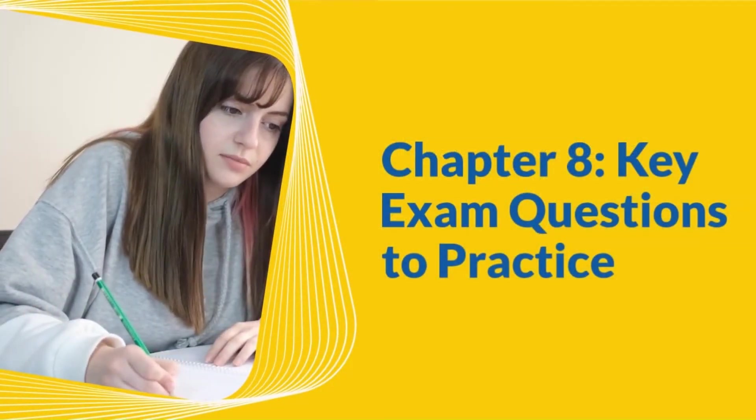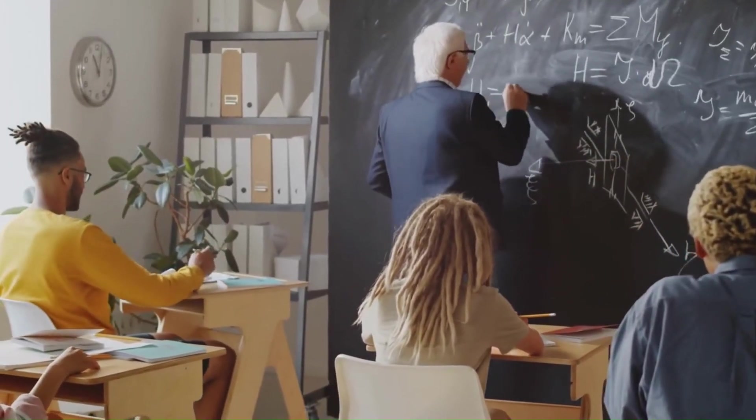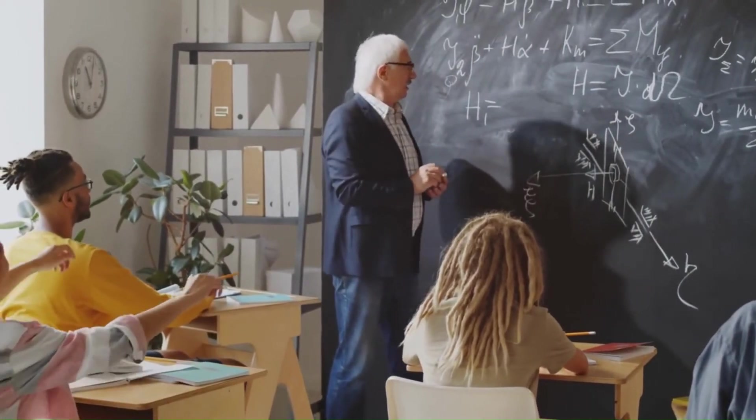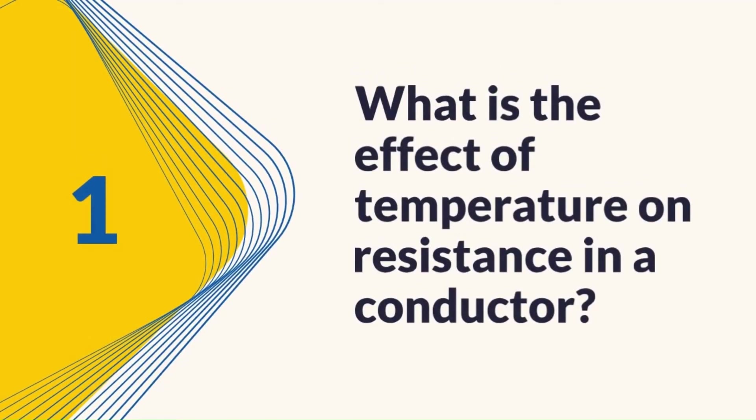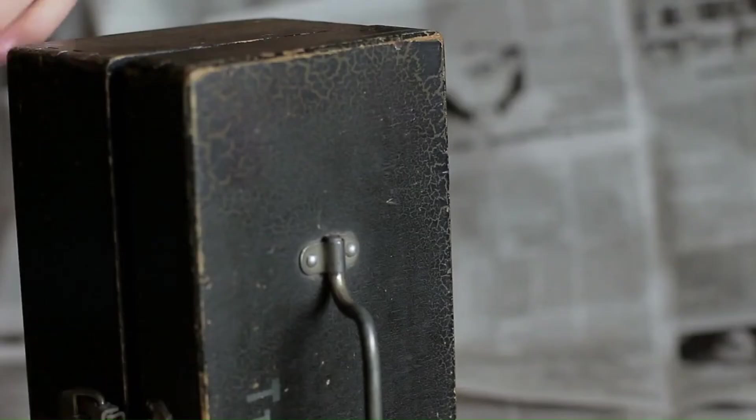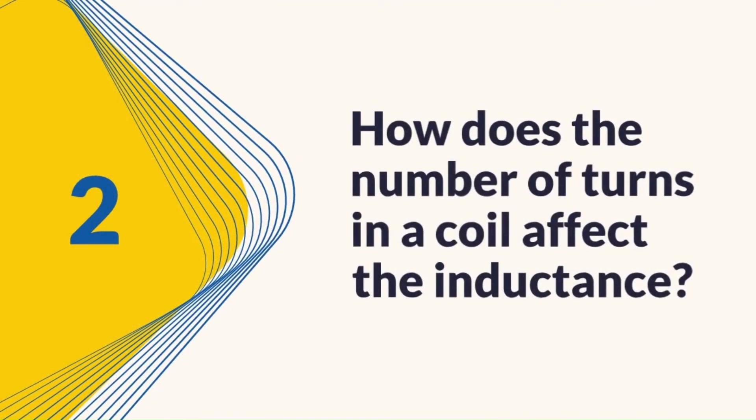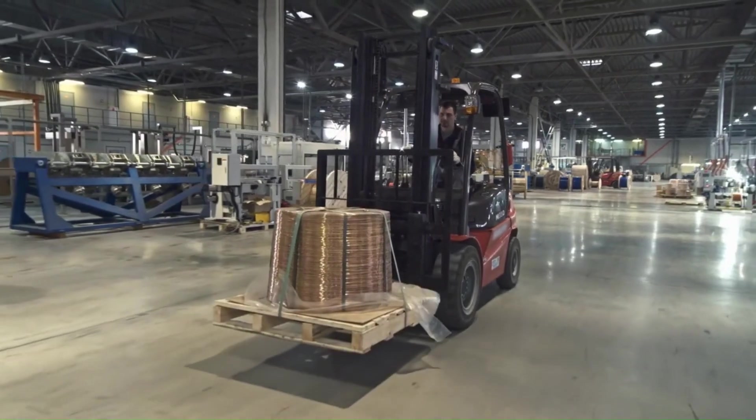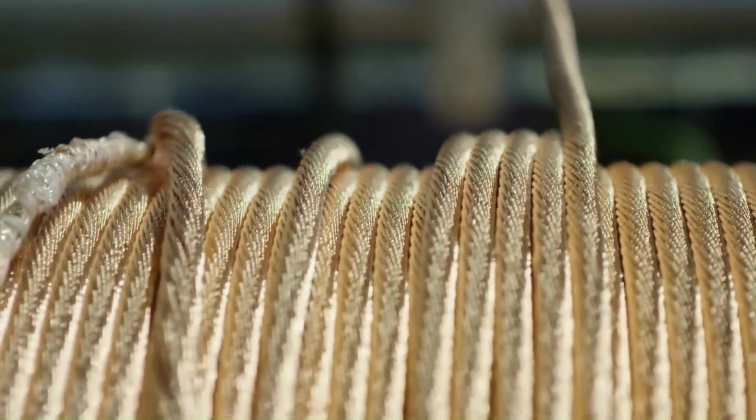Chapter 8: Key Exam Questions to Practice. Alright, let's discuss a few important questions that often come up in competitive exams. What is the effect of temperature on resistance in a conductor? The answer is, if the temperature increases, resistance also increases in most of the conductors. How does the number of turns in a coil affect the inductance? The answer is, if you have more turns in the coil, then it will increase the inductance.